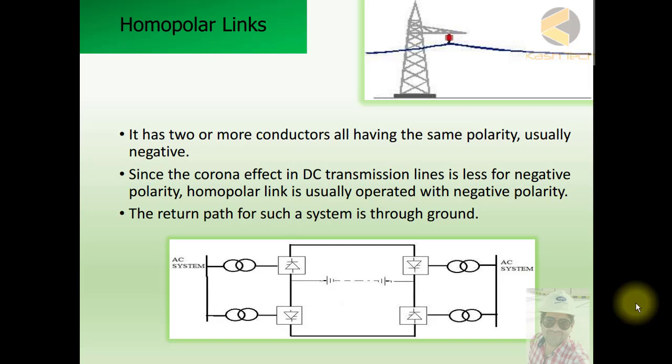Welcome guys, we will discuss now homopolar links. We have earlier discussed monopolar and bipolar, now we are discussing homopolar links. So a homopolar link has two or more conductors all having the same polarity, and it is usually negative.